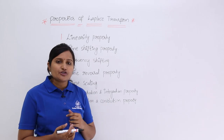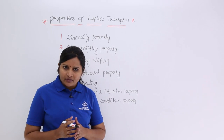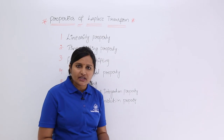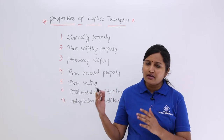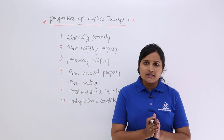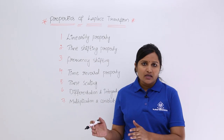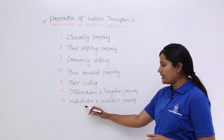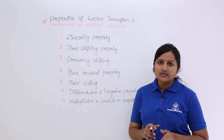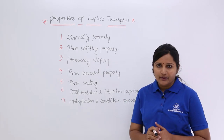Coming to the multiplication and convolution property. If you are having two signals with different transforms — for example x(t) having X(s) and y(t) having Y(s) — if you multiply those two signals, the resultant multiplied signal has a transform, which we define in the multiplication property. The convolution of those two signals also has a different transform, which will be covered in the convolution property.